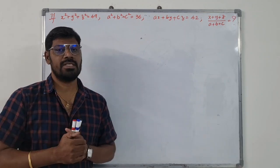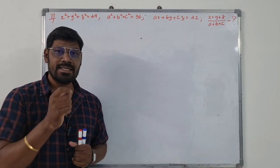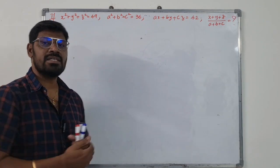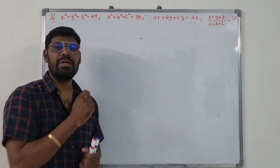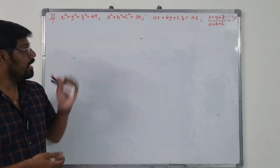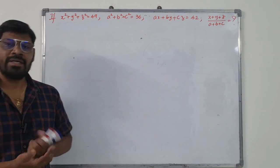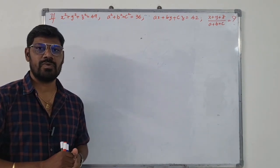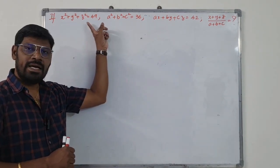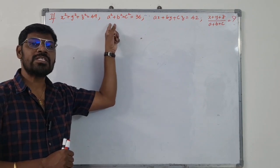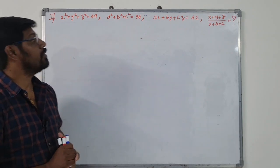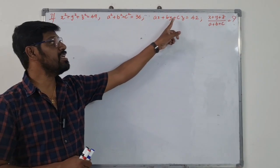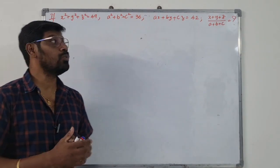There are many answers and many questions. What is the problem? If x squared plus y squared plus z squared equals 49, and a squared plus b squared plus c squared equals 36, and ax plus by plus cz equals 42.